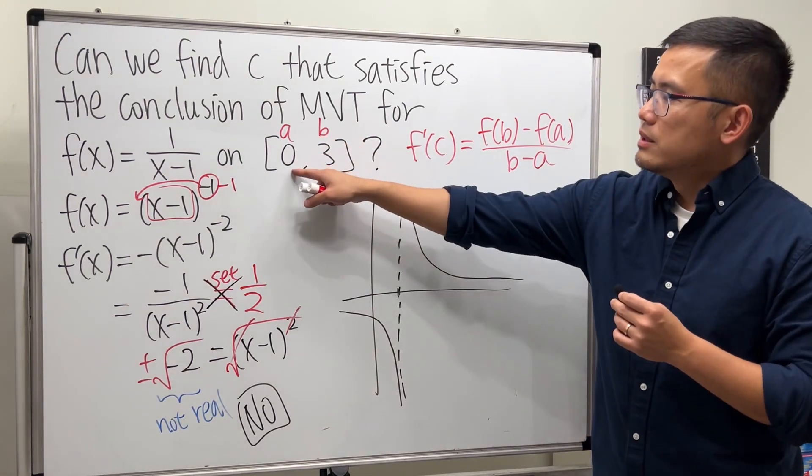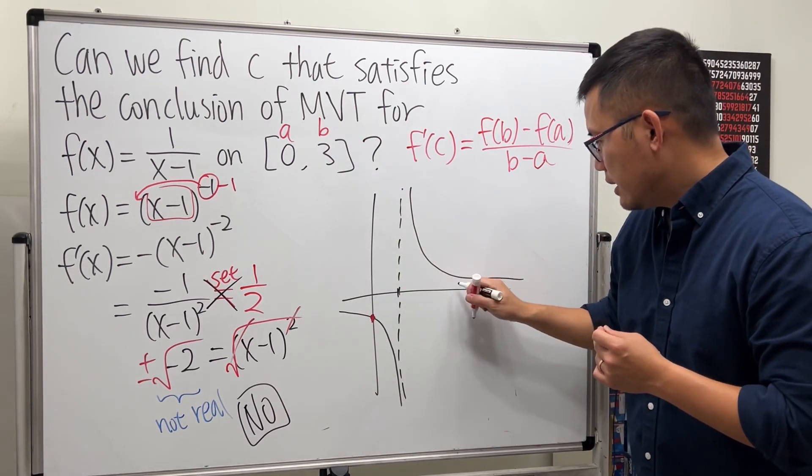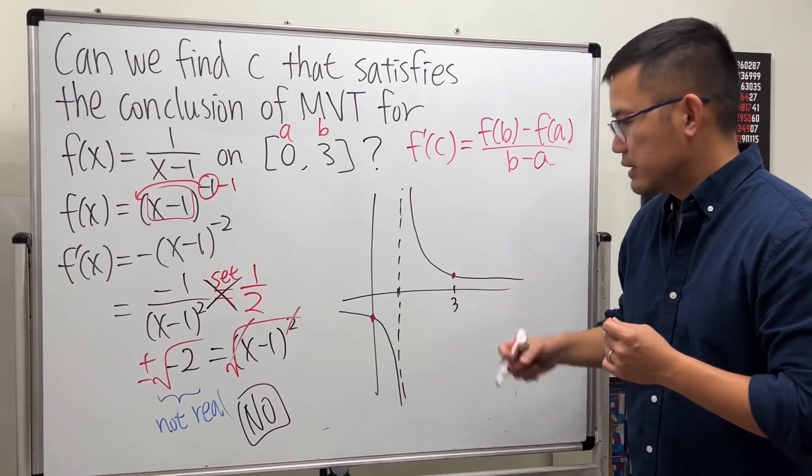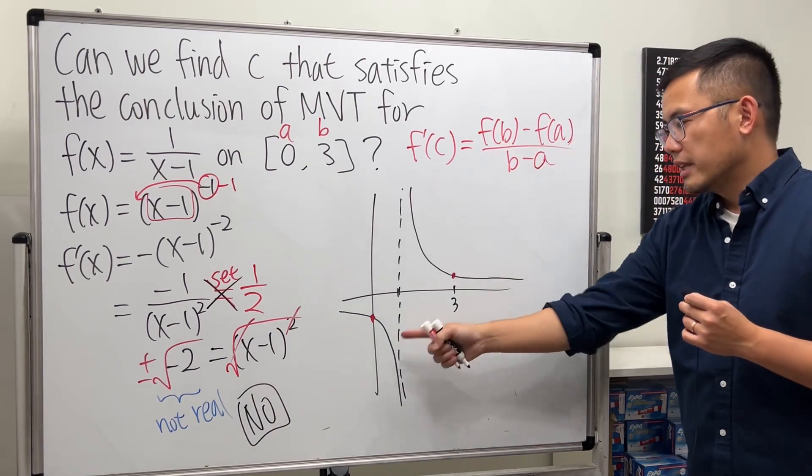Now, when x is 0, we have a point here. And when x is 3, let's say 3 is right here. So it's like this. This is the slope of the line connecting the endpoints.